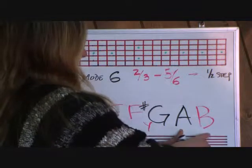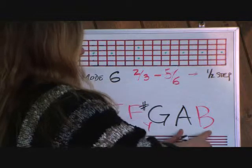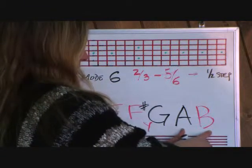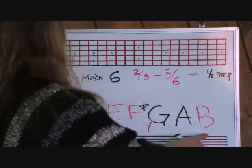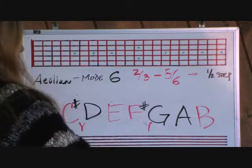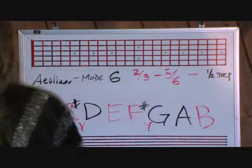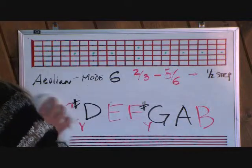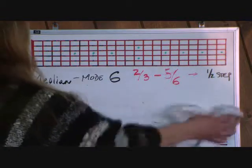Seventh to eighth, A to B, is a full step, so you leave that one alone as well. So there you have the two sharps for the B Aeolian, mode 6.